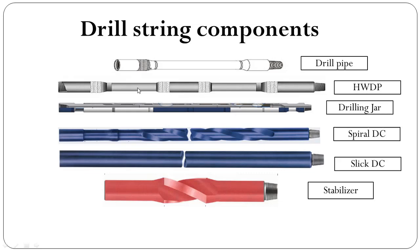This one is a heavyweight drill pipe. It looks similar to the drill pipe but has two prominent differences. The first is that it has a hard-faced banding in the middle. Another difference is that the tool joint pin and box are longer compared to the drill pipe. Additionally, the heavyweight drill pipe is heavier than the standard drill pipe.